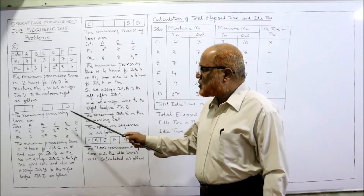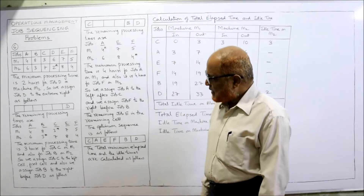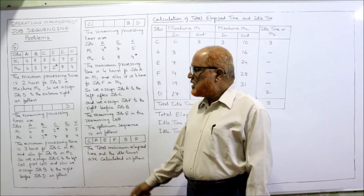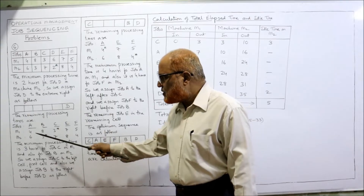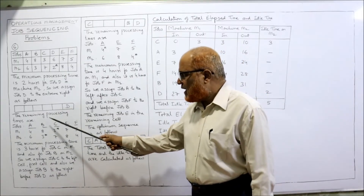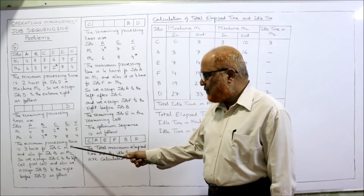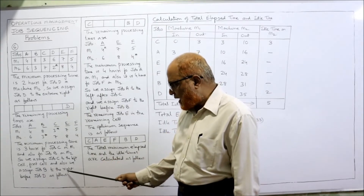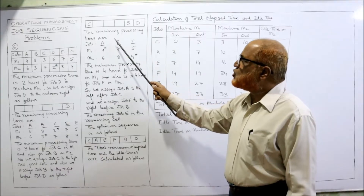Excluding D, the remaining jobs are A, B, C, E, F. Again we look for the minimum processing time — there is a tie at 3 hours. Three hours is the minimum for job C on M1 and also for job B on M2. Since job C is on M1 we assign from the left, and since job B is on M2 we assign from the right before job D. So job C goes in the first cell on the left, and job B is assigned to the right just before job D.